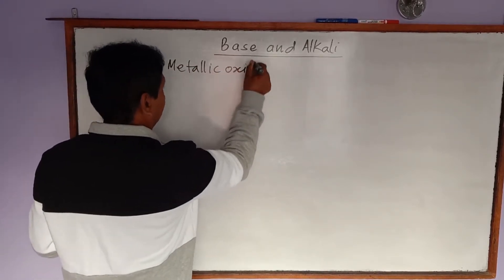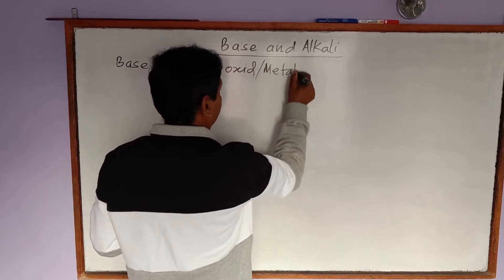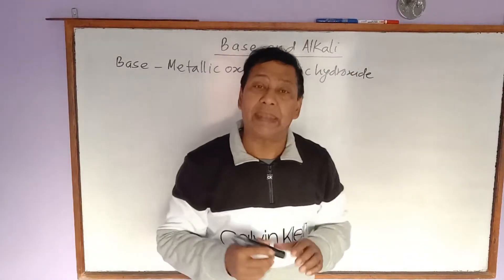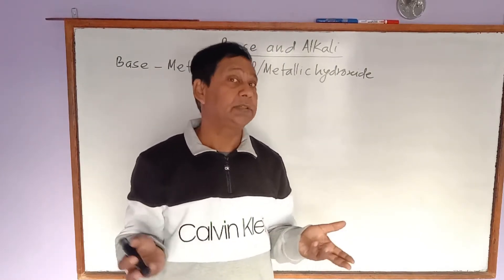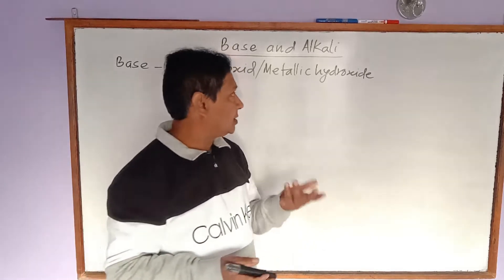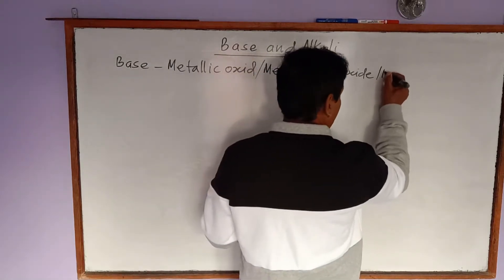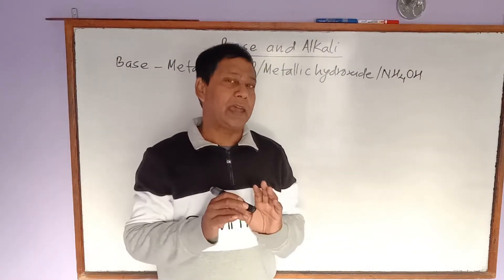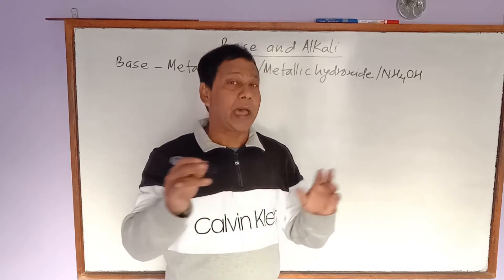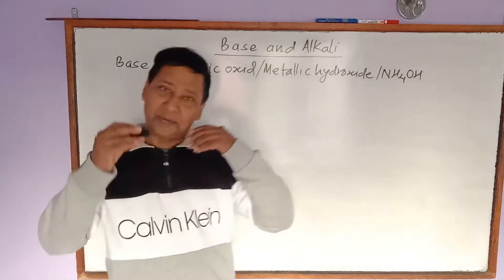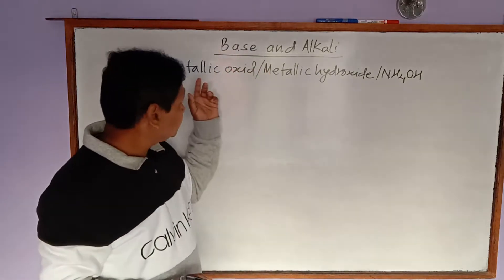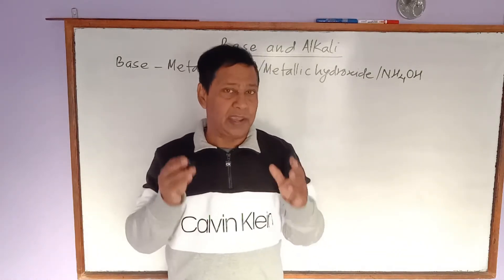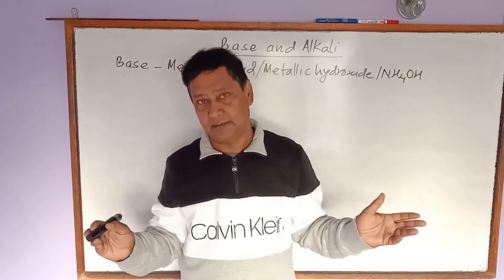We can define a base as metallic oxides and metallic hydroxides. If you want to write more completely, you can also include ammonium hydroxide — which is not a metallic hydroxide but is still a base. So metallic oxides, metallic hydroxides, and ammonium hydroxide, which when reacted with acid give only salt and water as products — this is the complete definition of a base.